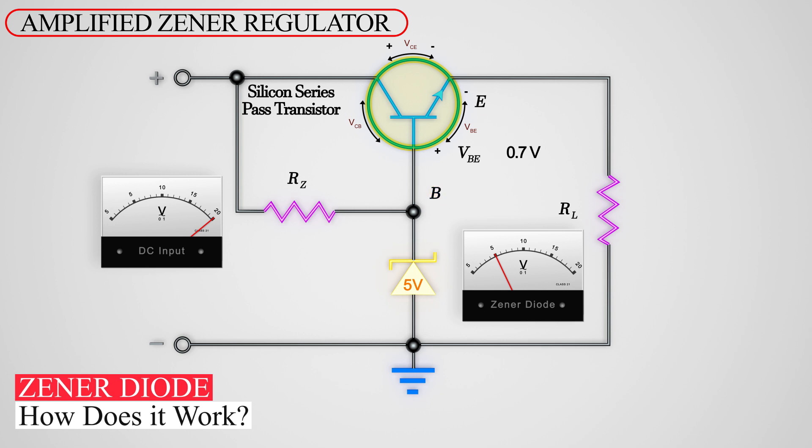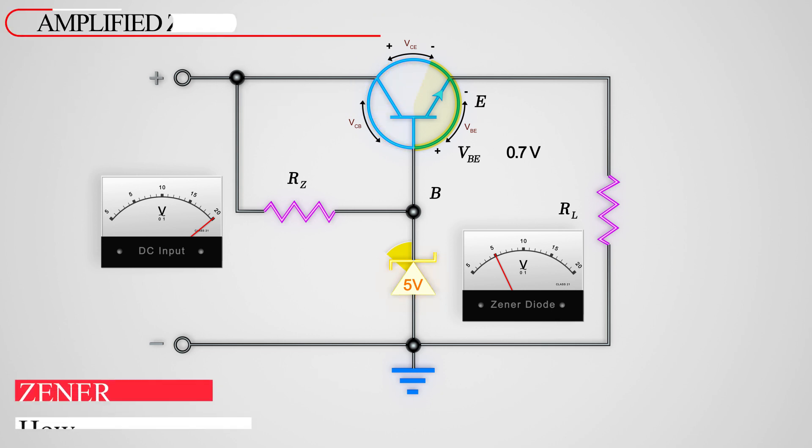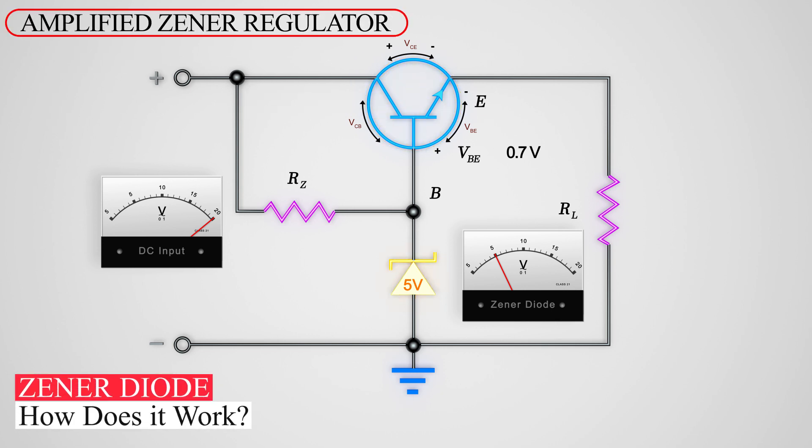The base of this transistor is connected directly to our 5 volt Zener diode. Keeping in mind the rule of 0.7, we can determine that the output voltage at the emitter will be 0.7 volts less than the voltage at the base, or 4.3 volts.